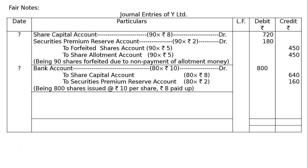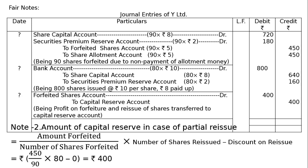Note: By mistake '800 shares' was written in the narration — please rectify that to 80 shares. Third entry — transfer of capital profit to Capital Reserve: Forfeiture of shares is not trading profit; it is capital profit. Entry: Forfeited Shares Account debited, to Capital Reserve Account.